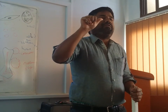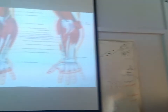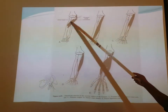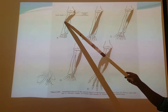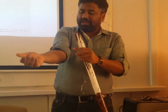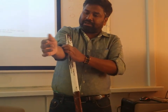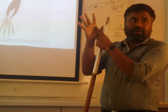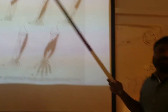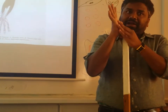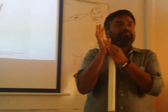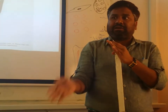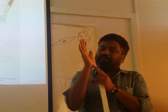Flexor digitorum superficialis — look at this muscle. The tendon divides into four slips for the four fingers. Pronator teres goes from humerus and ulna to radius, performing pronation. Flexor carpi radialis goes to the index finger. Palmaris longus: much of its tendon is expanded — an expanded tendon is called an aponeurosis — so it forms the palmar aponeurosis.